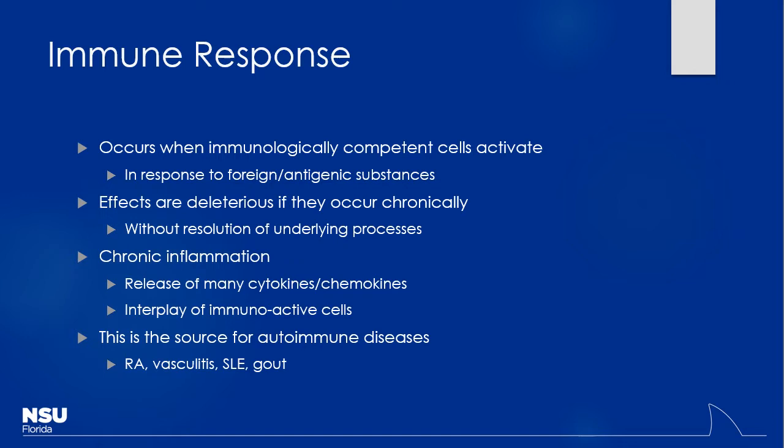How do we manage inflammation with ulcerative colitis and Crohn's disease? We use things like corticosteroids to help tamp down the immune system, and things like 5-aminosalicylic acid to decrease inflammation chronically. Similarly, here we're going to have drugs good for acute manifestations and also disease-modifying drugs that will help slow down progression to hopefully save the joints for as long as we can.